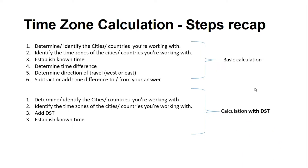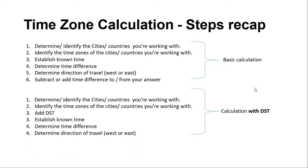Step four is where we determine the time difference between the two countries. Then we determine the direction of travel — whether we are subtracting or adding the time difference. The last step is where we subtract or add the time difference to get our answer. Note: with DST we still have six steps total.